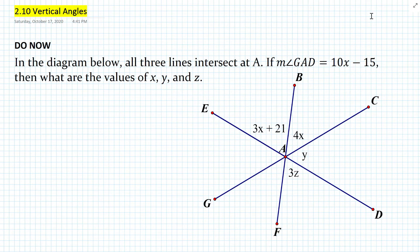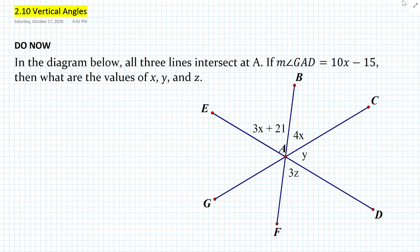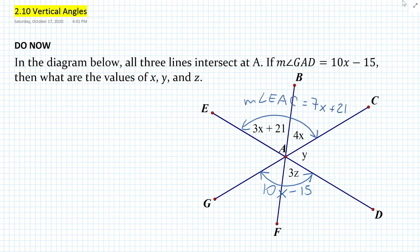In the diagram below, all three lines intersect at point A. If the measure of angle GAD is equal to 10x minus 15, then what are the values of x, y, and z? Notice that in this particular problem, we do not know anything about the relationship of vertical angles. So the goal in today's lesson is to actually figure it out. We know that angle GAD is 10x minus 15, and the measure of angle EAC is equal to 7x plus 21.